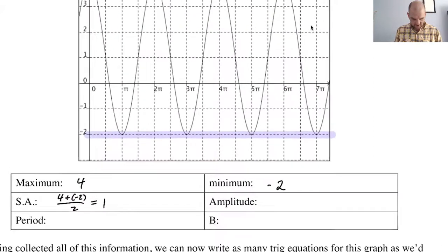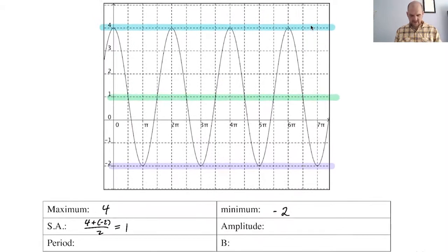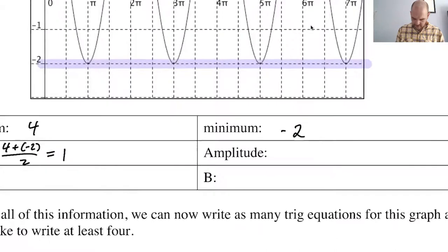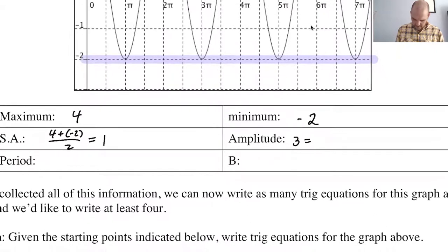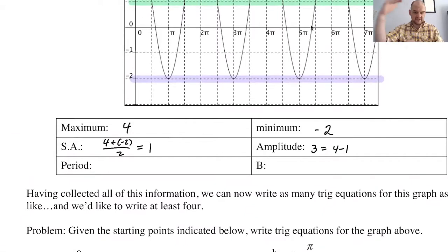So the amplitude though is definitely, let me actually, let's put in the sinusoidal axis. So this is our sinusoidal axis. The amplitude is how far you can go from the sinusoidal axis. So that's this distance right here. So the amplitude is definitely three. Now you can get that in a number of ways. So I'm going to say three, which is equal to four minus one. That's one way to get it. Go from the maximum to the sinusoidal axis. What's the distance?